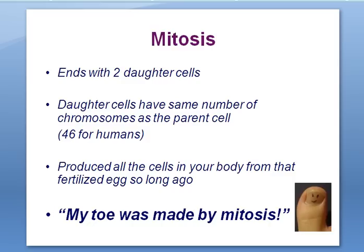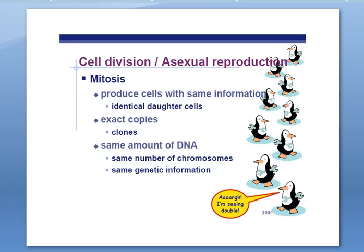Remember that mitosis ends with two daughter cells. The daughter cells have the same number of chromosomes as the parent cell — for us humans, that's 46 — and we produced all the cells in our body by mitosis. Another way to remember that your body cells are made by mitosis is: mito-is made by mitosis. Mitosis produces two cells that are genetically identical to the starting cell. These genetically identical cells are called clones. All the cells in your body are clones of every other cell — they have the same amount of DNA, 46 chromosomes, and the same genetic information.